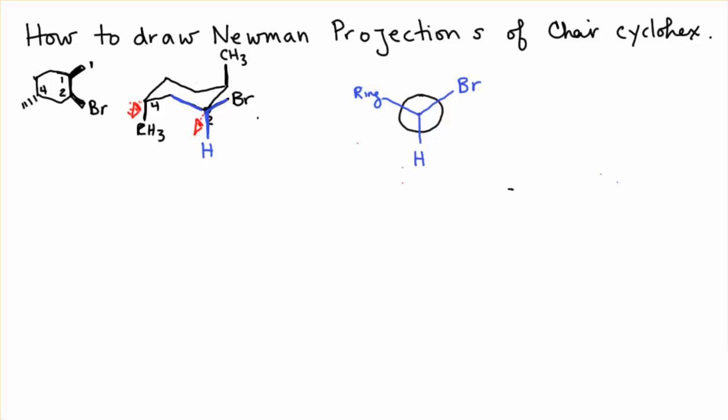The carbon in the back, I'll make it green, has a methyl group coming straight up. Coming down into the right is the hydrogen atom. And going down into the left is the ring.